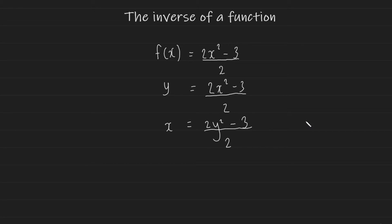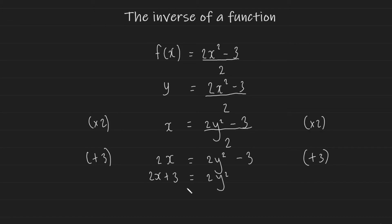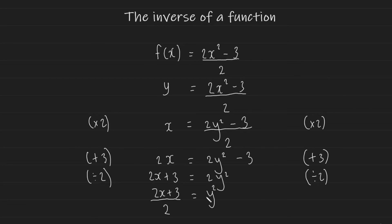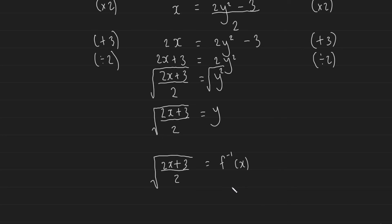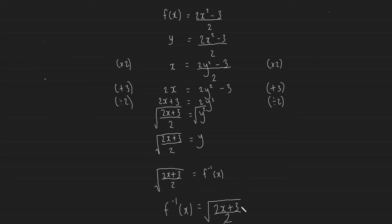Step three: rearrange for y. Multiply both sides by 2 to eliminate the denominator. Then add 3 to both sides to eliminate the minus 3, leaving 2x + 3 = 2y². Divide both sides by 2, giving (2x + 3) / 2 = y². Finally, square root both sides to get y = √((2x + 3) / 2). So f⁻¹(x) = √((2x + 3) / 2).